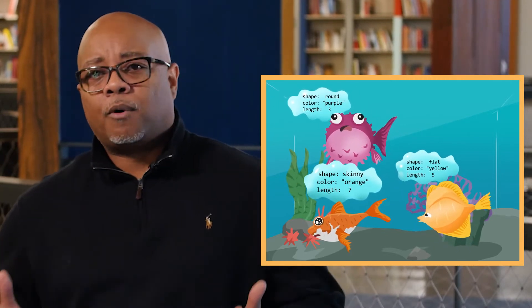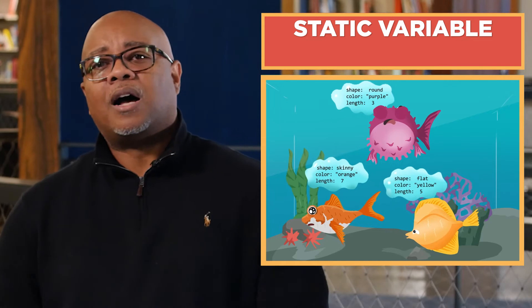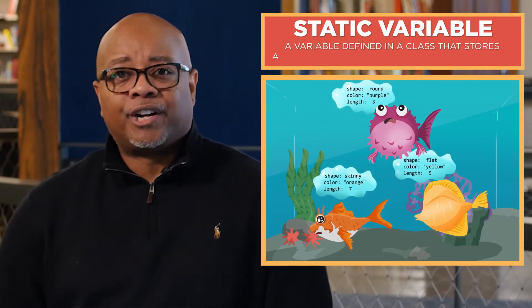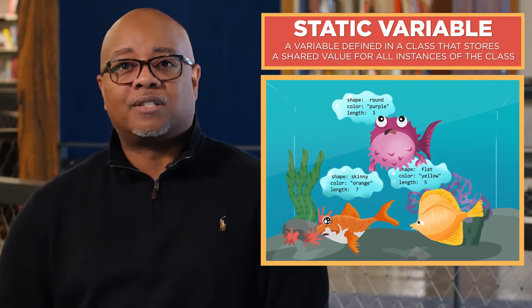Let's imagine we have a lot of fish in an aquarium. There are different shapes, colors, and lengths. We can set up a fish class with instance variables specific to each fish in the tank. But what if we need information that is shared between the fish? In that case, we keep track of this type of information using something called a static variable — a variable defined in a class that stores a shared value across all instances of the class.